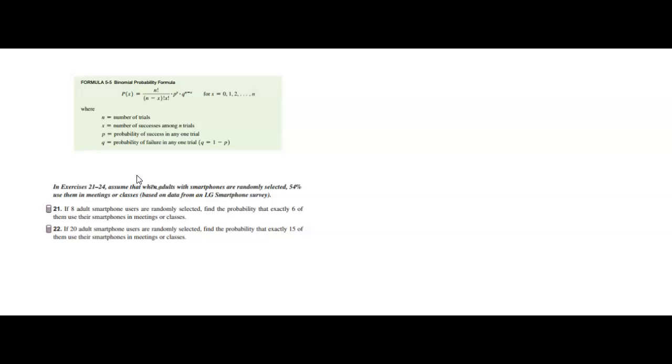In a binomial probability, the basic idea is that something either happens or it doesn't. So you have a probability of success and one minus that is your probability of failure, and that's defined up here as you see.